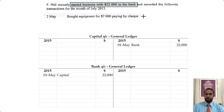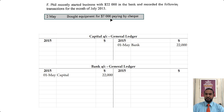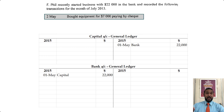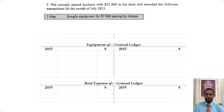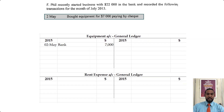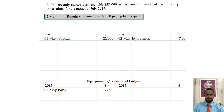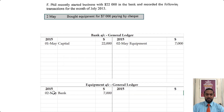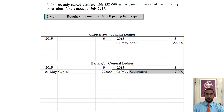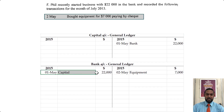Capital is also increasing so we have to credit capital. On the 2nd of May, we bought equipment for $7,000 paying by check. If you paid by check, your bank account would have gone down — to record a decrease in an asset you credit the asset account. We're going to debit equipment to record an increase in equipment. So you're seeing the debit entry here corresponding with the credit entry here.